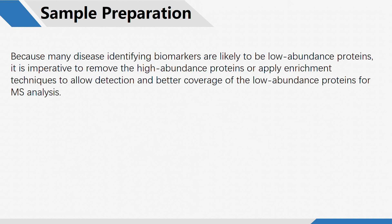Because many disease-identifying biomarkers are likely to be low-abundance proteins, it is imperative to remove the high-abundance proteins or apply enrichment techniques to allow detection and better coverage of the low-abundance proteins for mass spectrometry analysis.